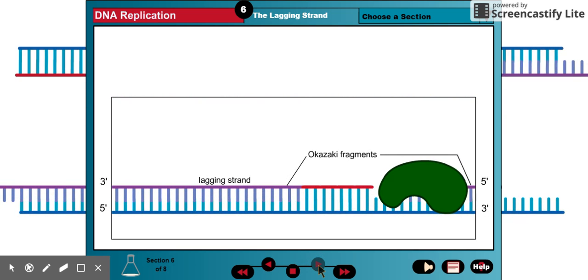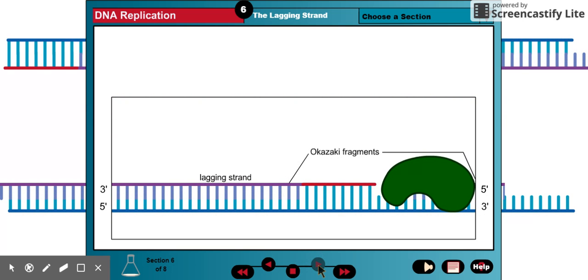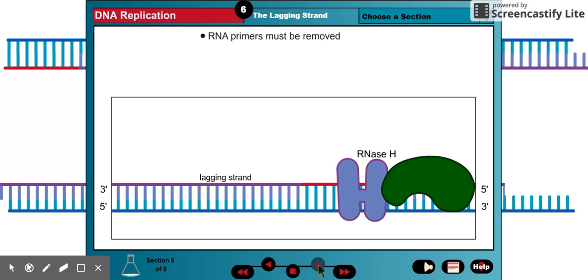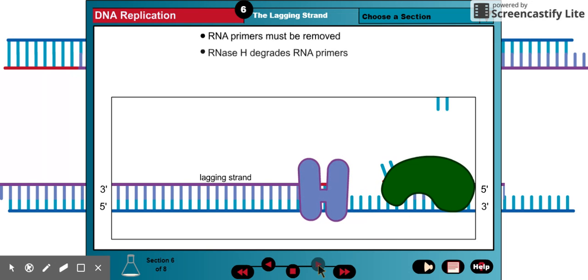Before the lagging strand DNA exits the replication factory, its RNA primers must be removed and the Okazaki fragments must be joined together to create a continuous DNA strand. The first step is the removal of the RNA primer. RNase H, which recognizes RNA-DNA hybrid helices, degrades the RNA by hydrolyzing its phosphodiester bonds.